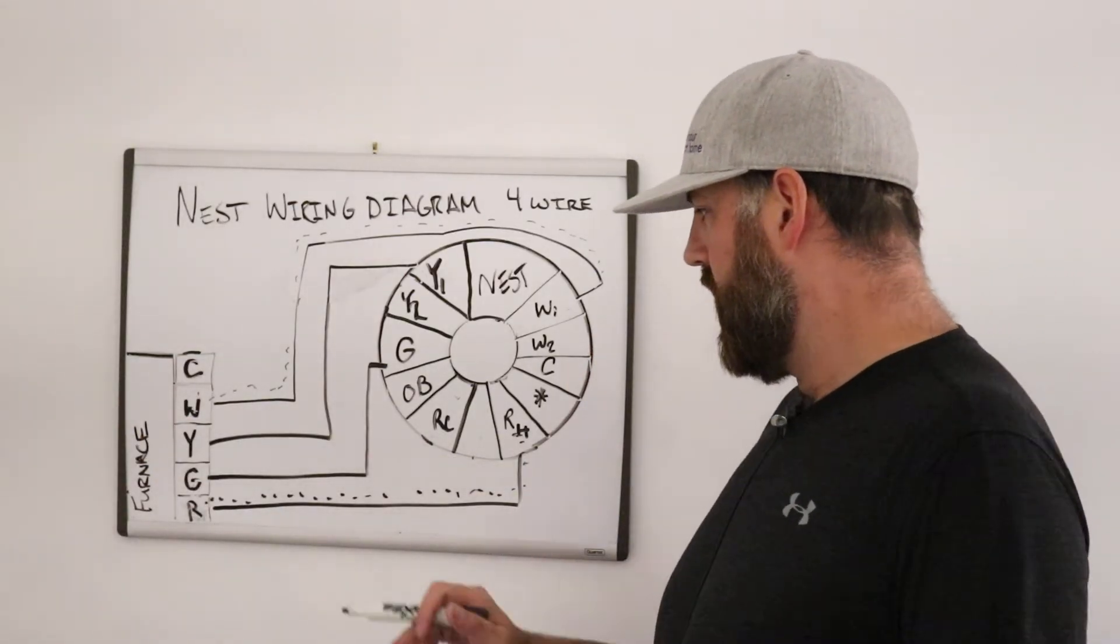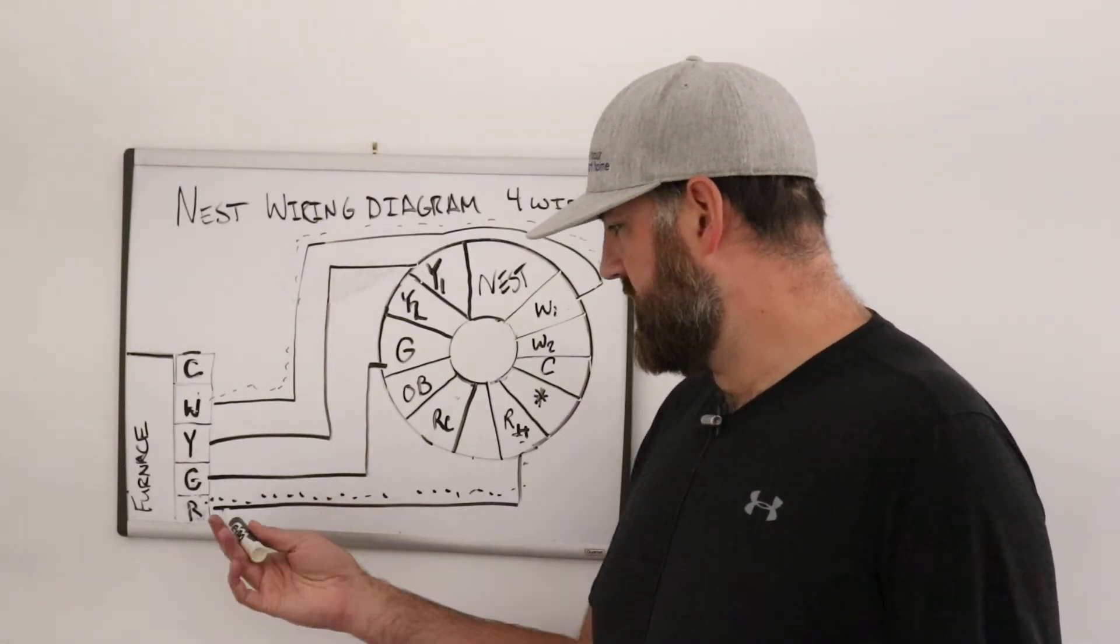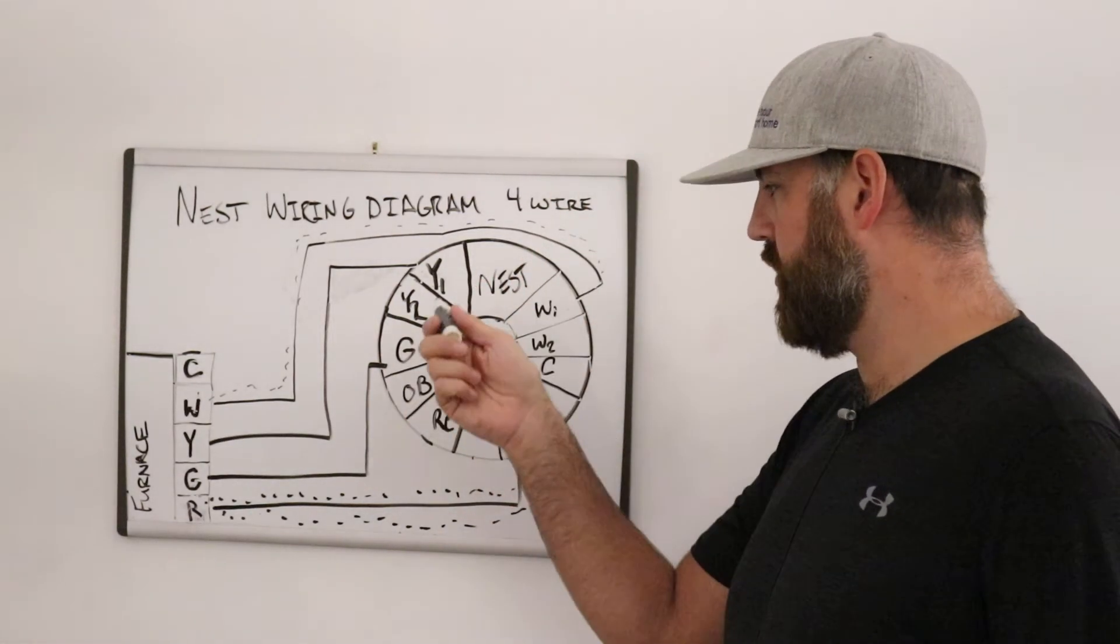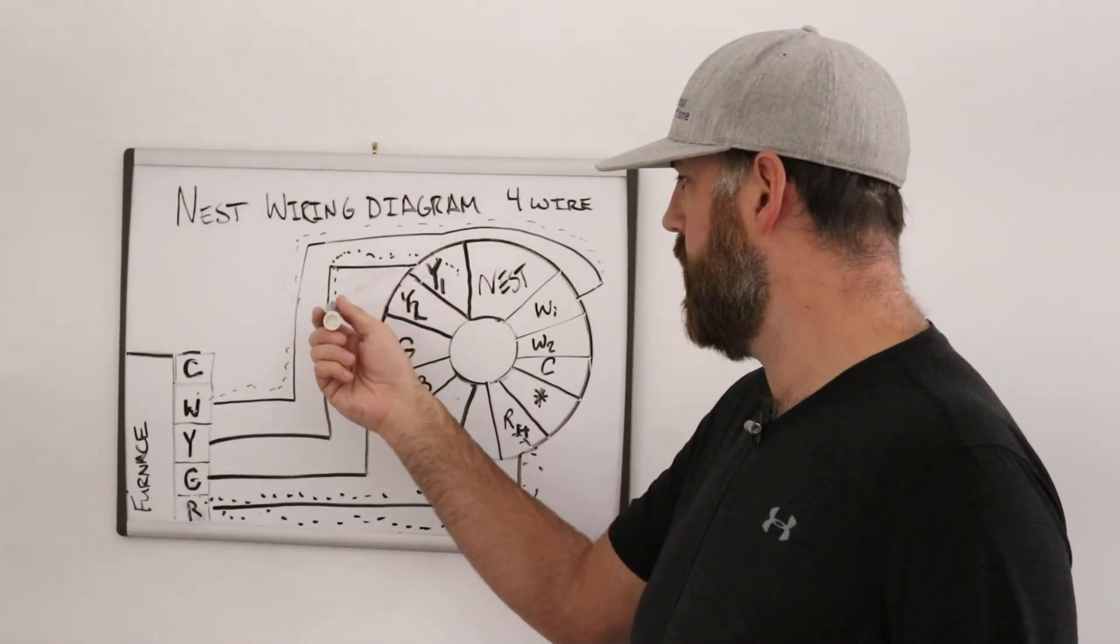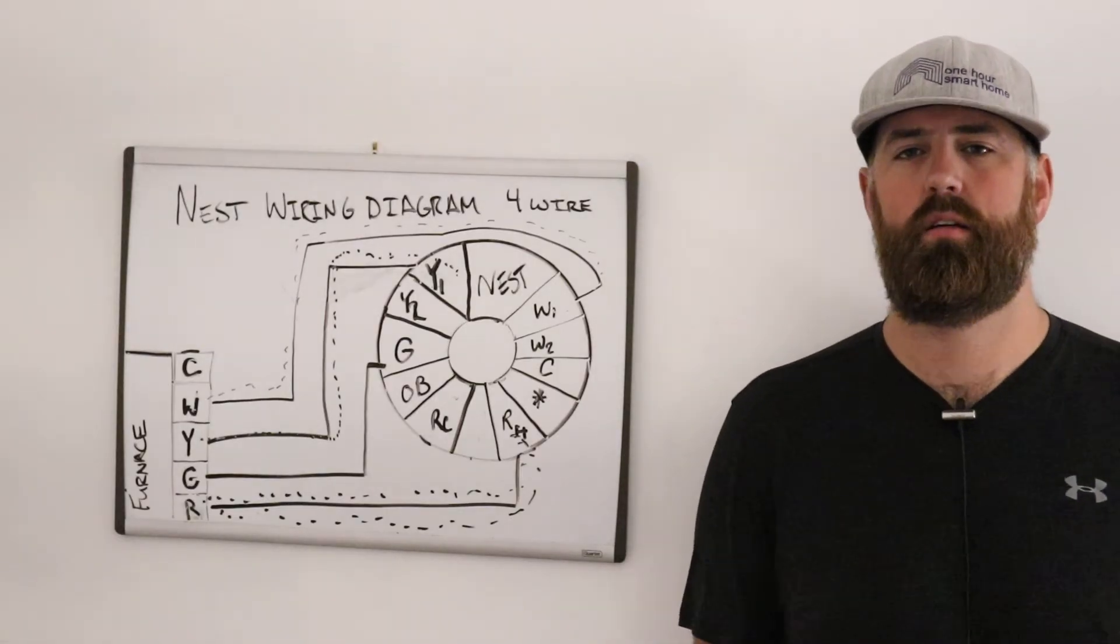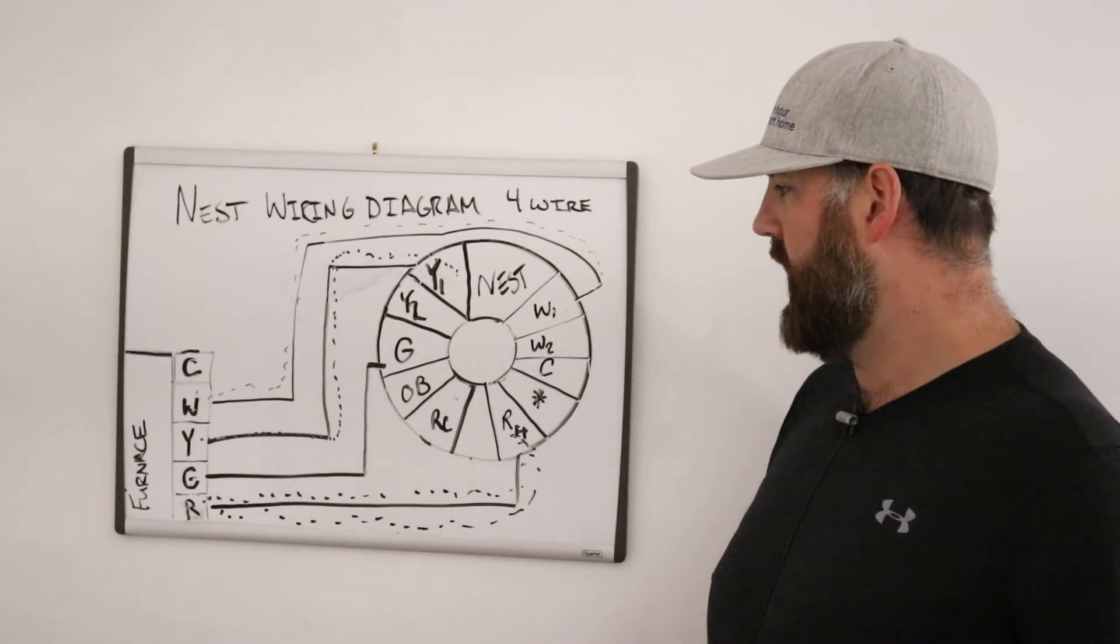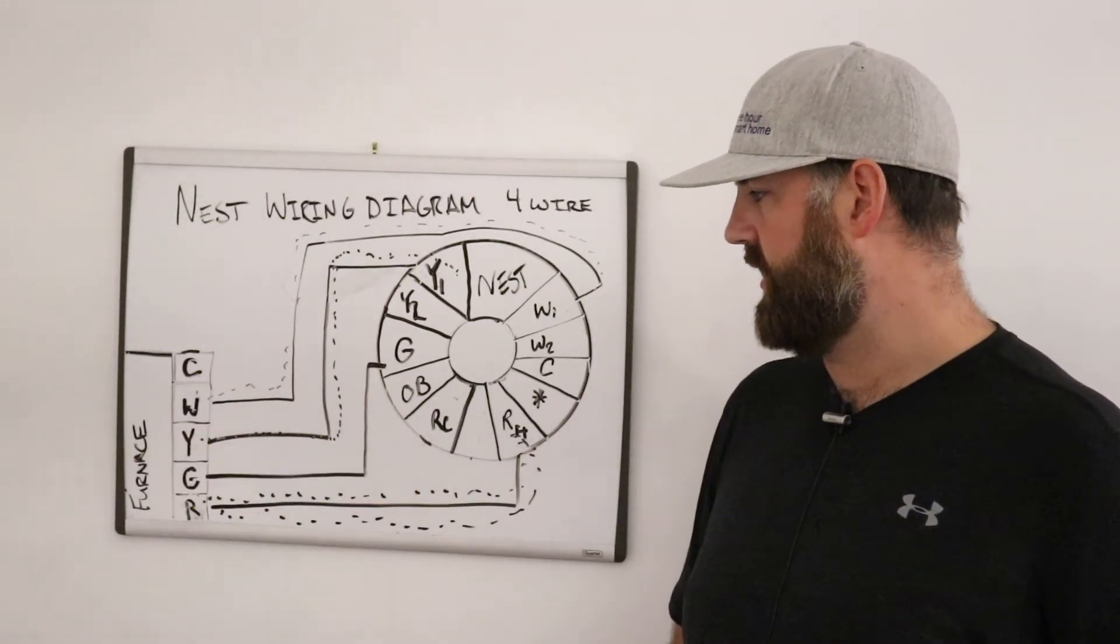But if you were calling for air conditioning, so you've got it turned down to 50, it's a very hot day in the summer, what you would still have is power coming from the R, power always comes from the R, goes through the RH into the Nest, and then the Nest says, okay, cooling. It closes the appropriate internal circuit inside here. And then power goes back down the Y1 terminal, the yellow wire, Y, and it goes down to the Y terminal on the furnace and it turns on your air conditioning.